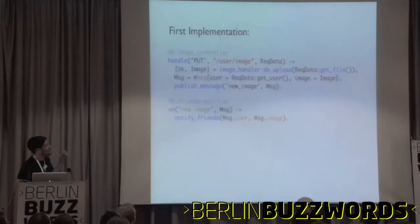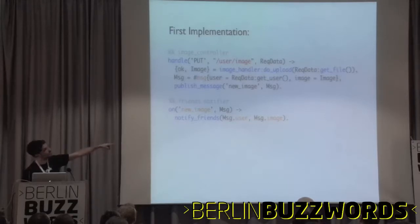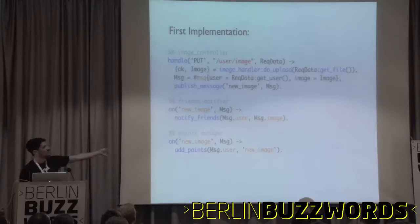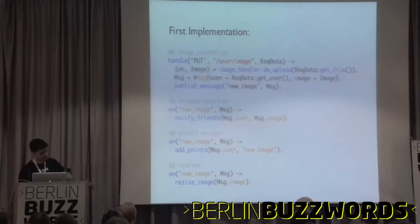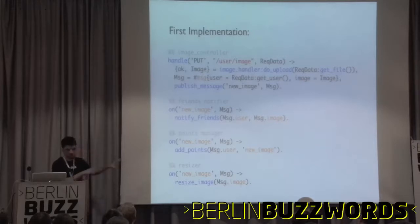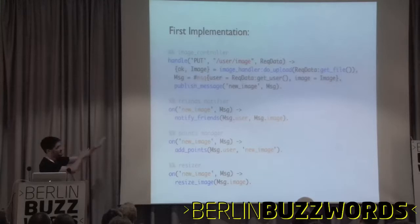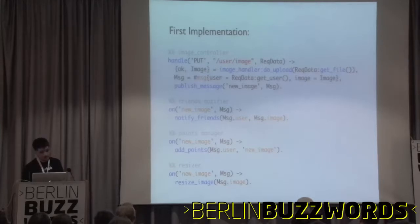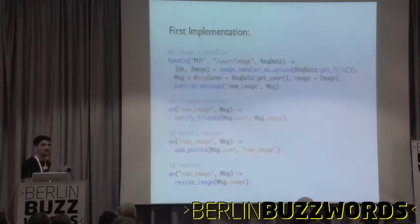The first implementation will be: we do the upload, we get some image data and metadata — the image path, something like that. We get the current user to get the user ID. Then we just publish a message, which will be 'new image' plus the message data. Then we have a friends notifier, which will be a subscriber that on 'new image' will notify the friends based on the user field and the image of the message. Then the points manager, on 'new image', will add points to the user. That's all we need to do on the controller — that's what messaging allows us to decouple.